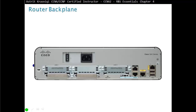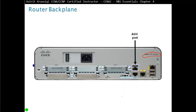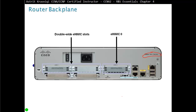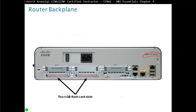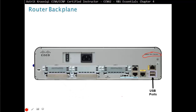Looking at the router backplane, on the back of this 1941 series router we see console ports — one normal RJ45 console and a new USB-B console. There is an AUX (auxiliary) port that serves the same purpose as a console for out-of-band configuration via a modem. There are also gigabit Ethernet LAN interfaces, wide-area network interfaces, VIC module slots, two 4GB flash card slots, and USB ports for transferring IOS and other files.